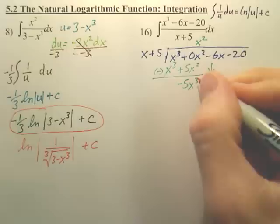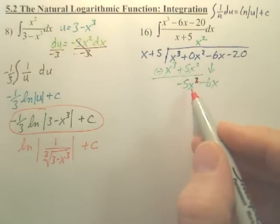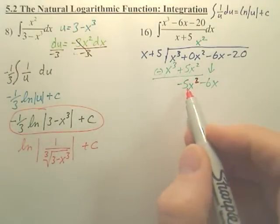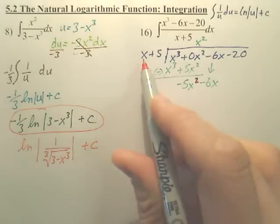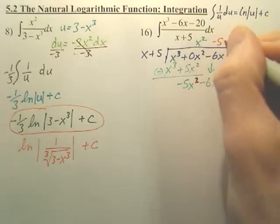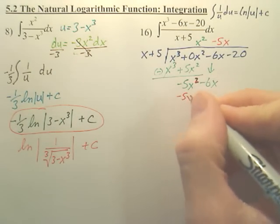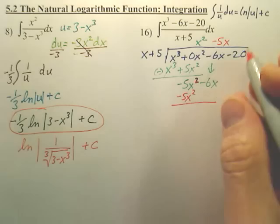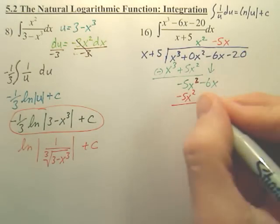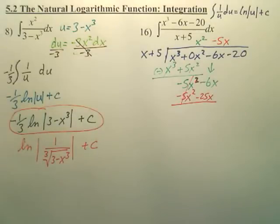I messed up. That should be a squared. So that's a squared. Now, I want negative 5x squared from the x. So what do we multiply x by to get this? It would be minus 5x. So negative 5x times x is negative 5x squared, and negative 5x times 5 is negative 25x. Gone.